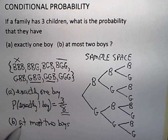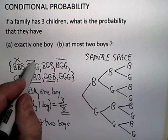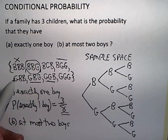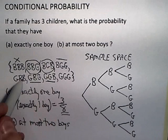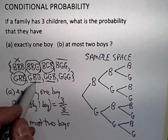At most two boys would include exactly two boys, which would give you—I'll just look at the circled ones. That one has two boys, that has two boys, that has two boys.